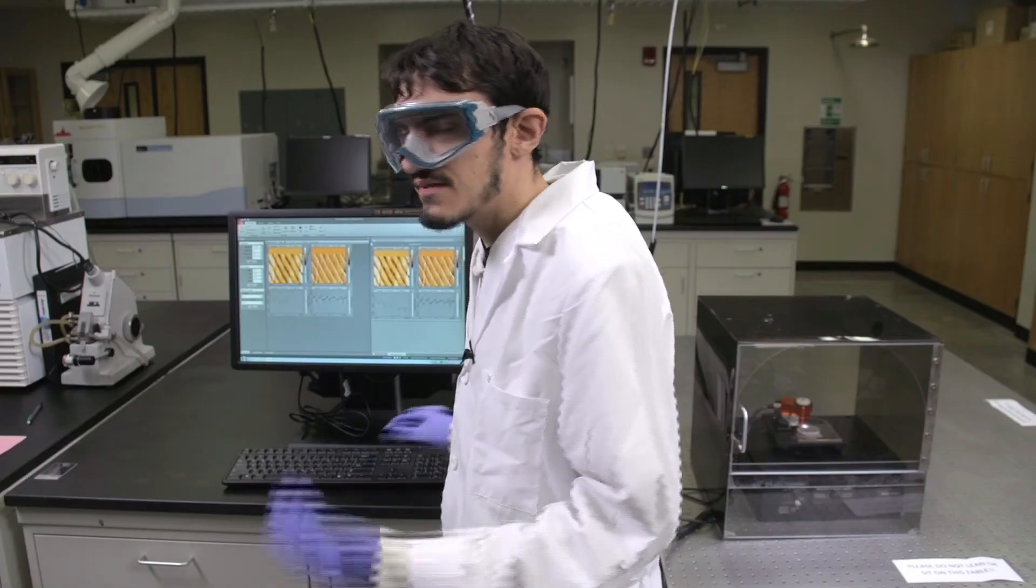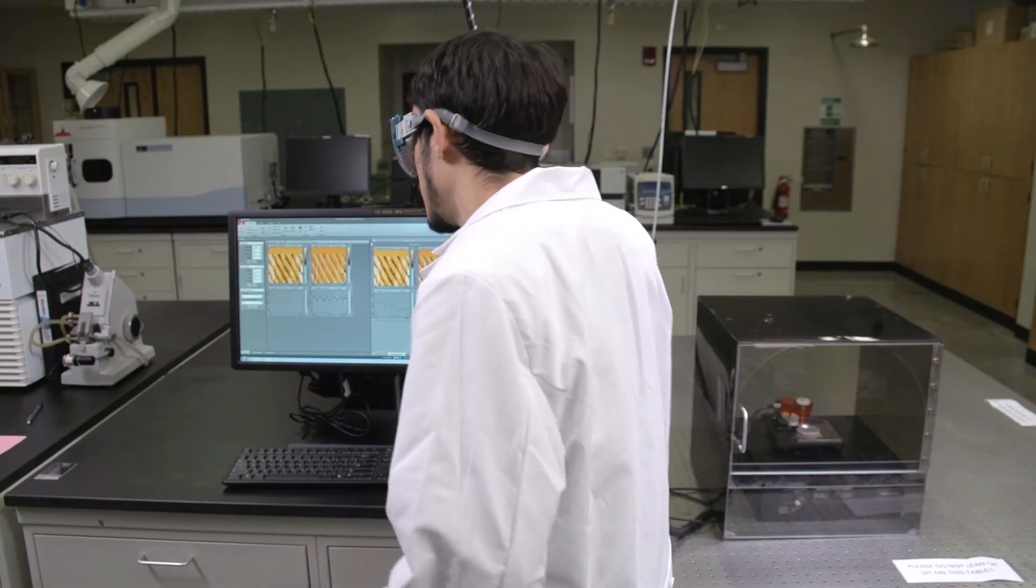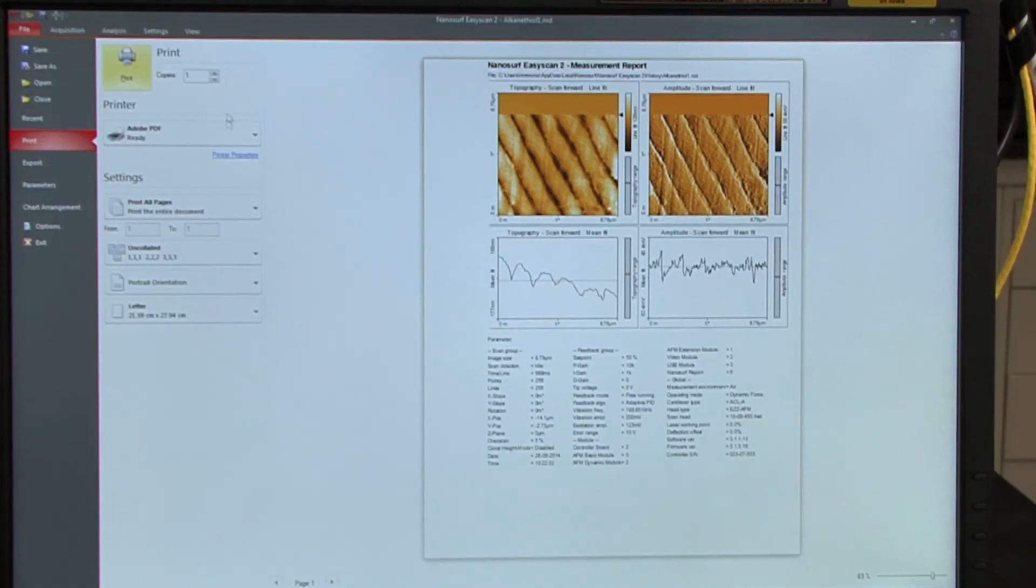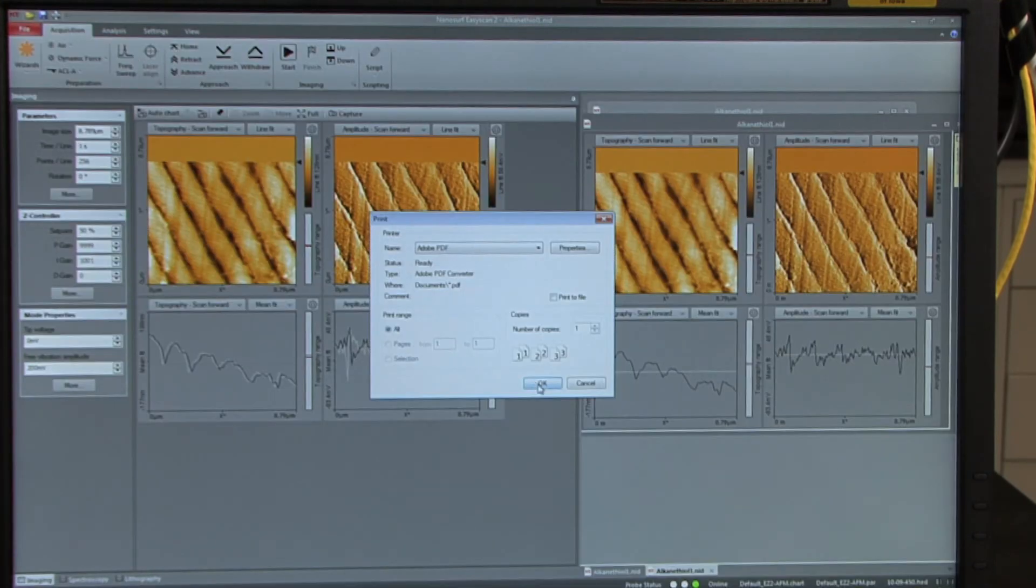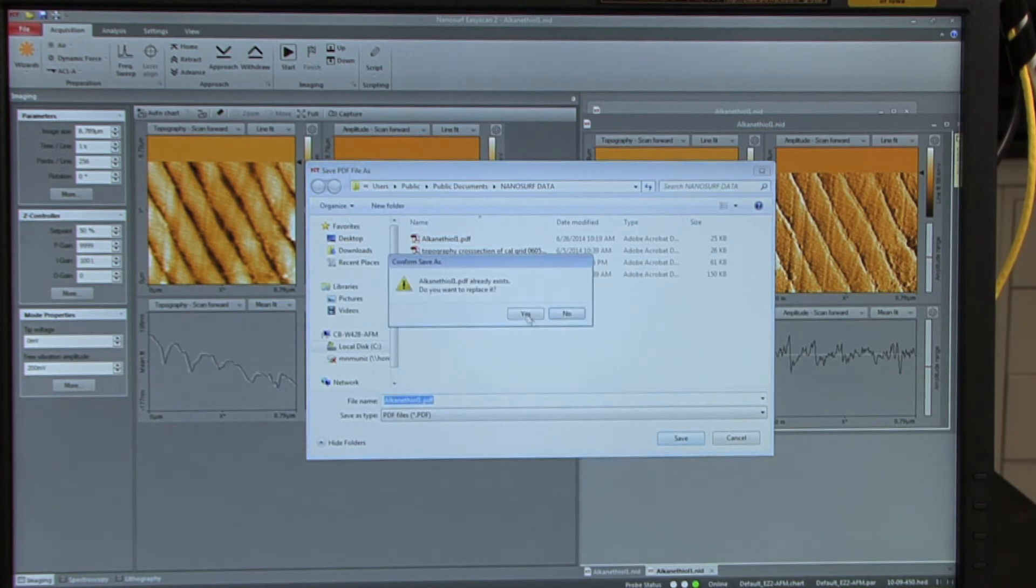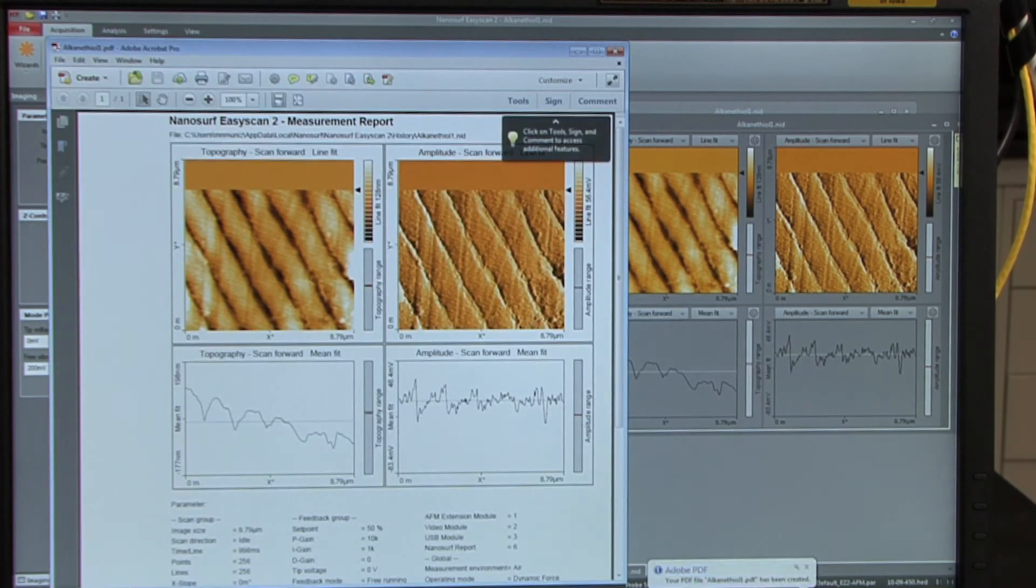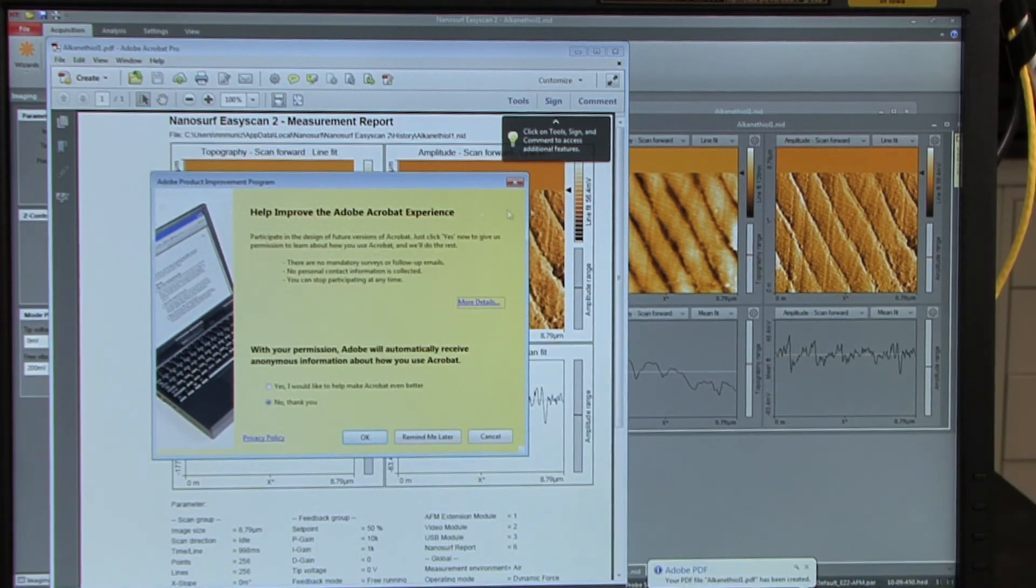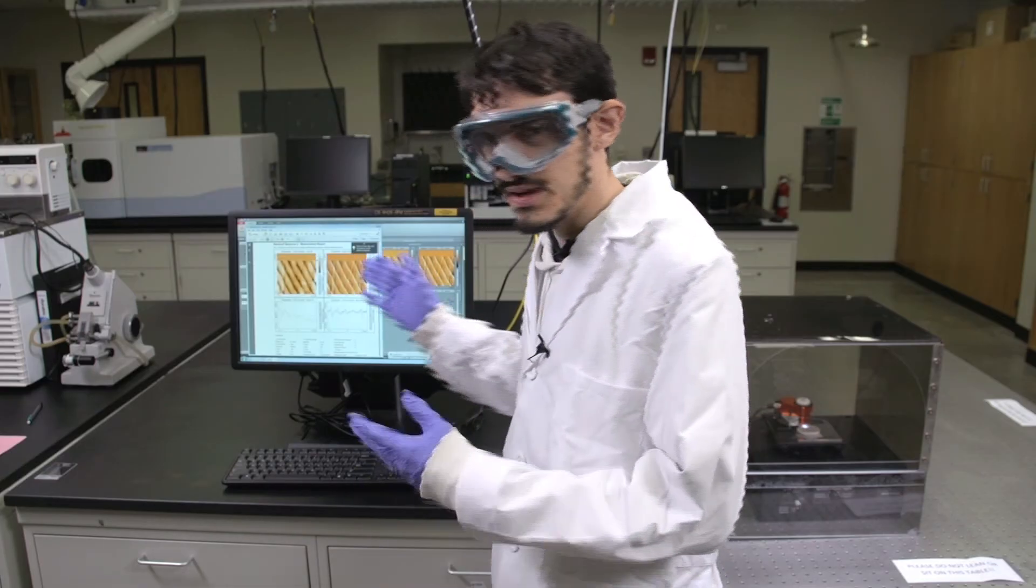Further, you can save this as a PDF as before by simply going to file, print, clicking Adobe PDF as the printer, clicking print, and you'll have all the information within a PDF.